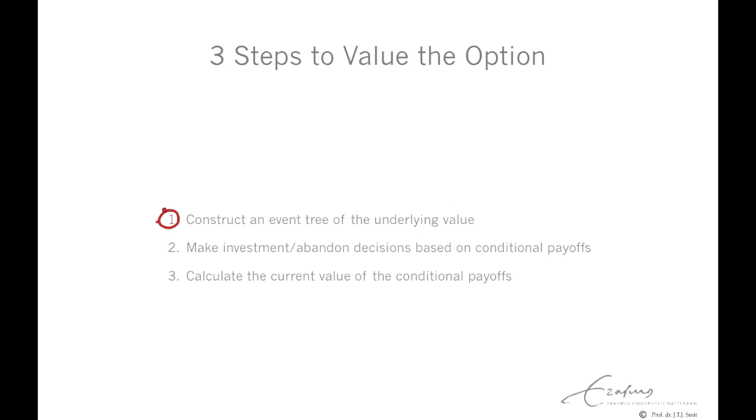An option valuation consists of three steps. One, we construct an event tree of the underlying value. So based on uncertainty, we have a forward process of the underlying value. Two, we make investment and abandonment decisions based on the conditional payoffs. And three, after we have estimated the conditional payoffs, we work the tree backwards to the current value.